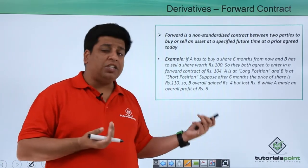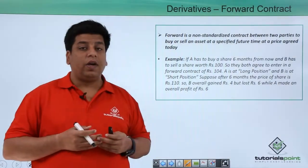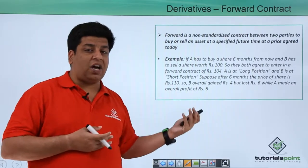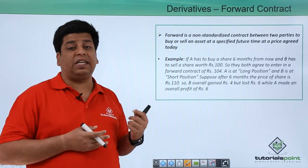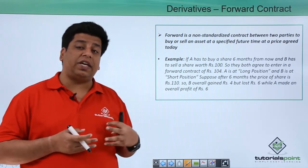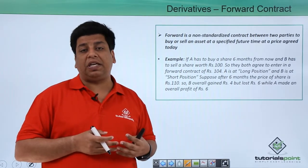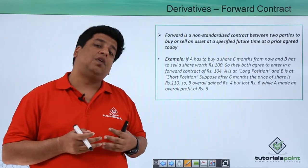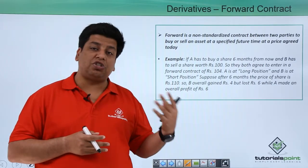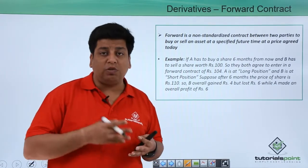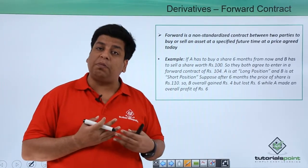After six months, let's say the price turns out to be ₹110. In this case, A is profitable since instead of buying the shares at ₹110, A gets them at ₹104 — a straight profit of ₹6. Similarly, B entered the contract when the price was ₹100 and is now selling at ₹104, making a profit of ₹4.